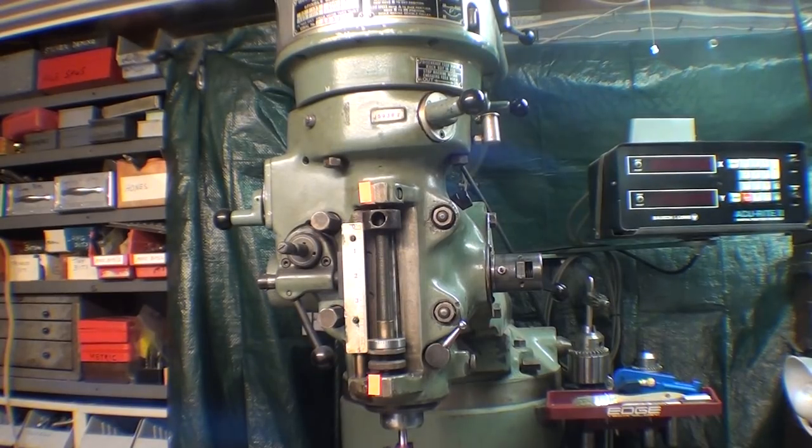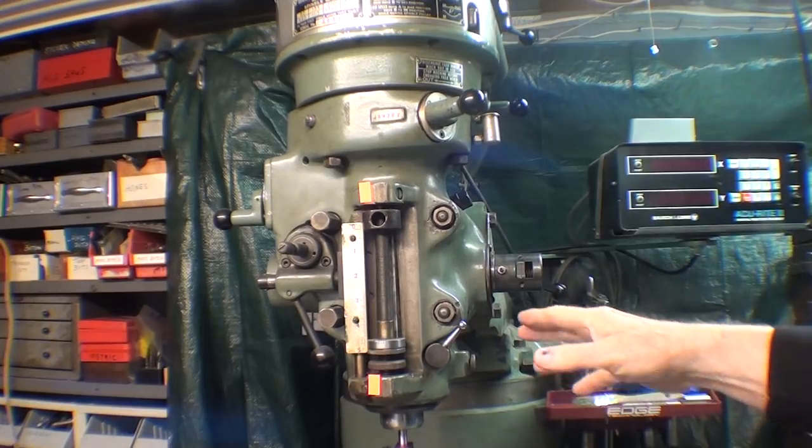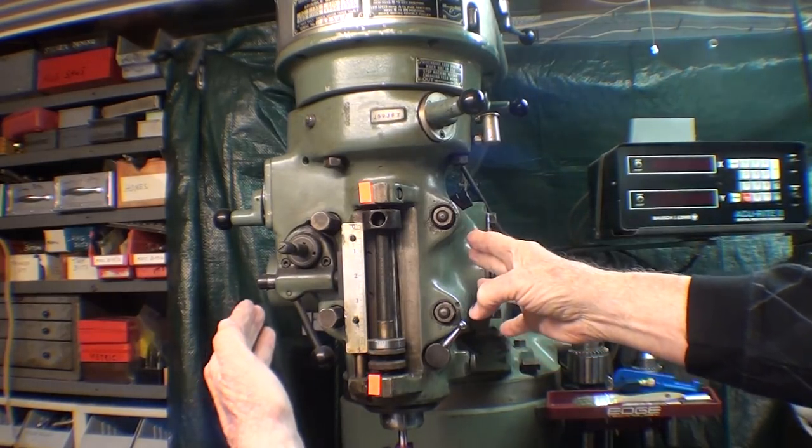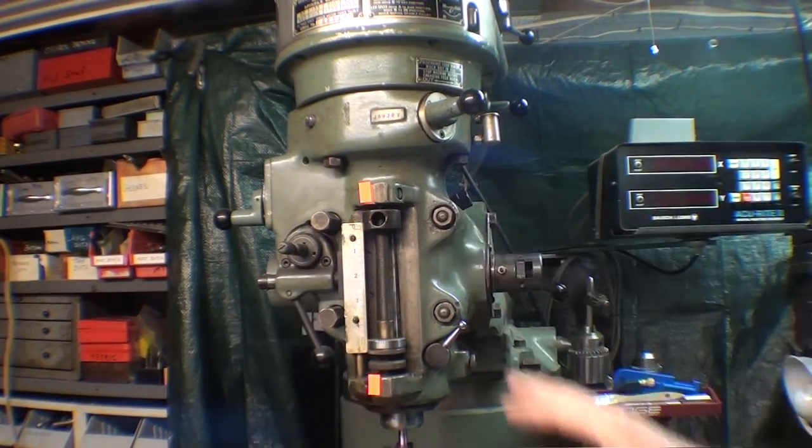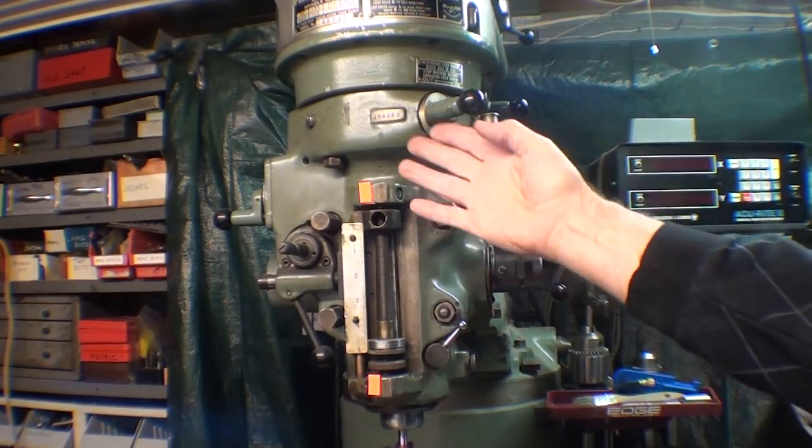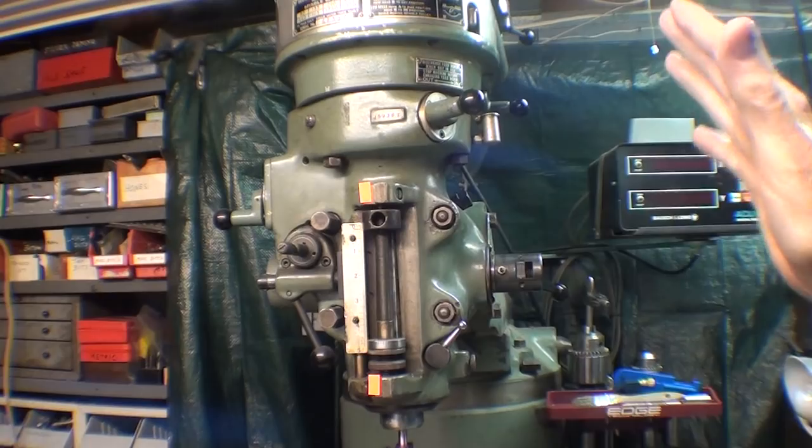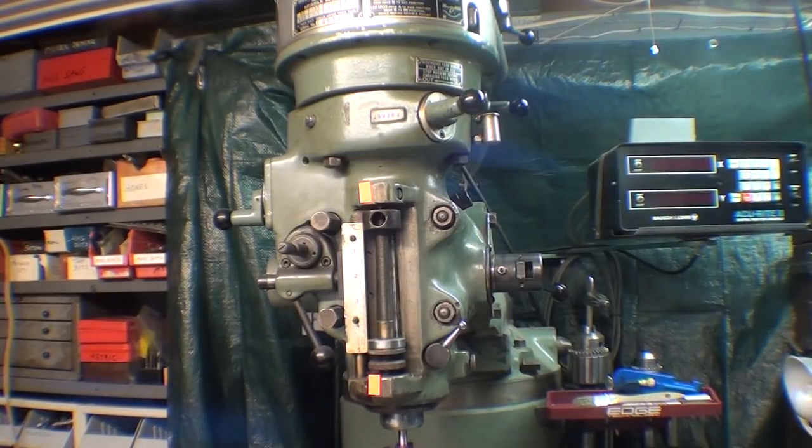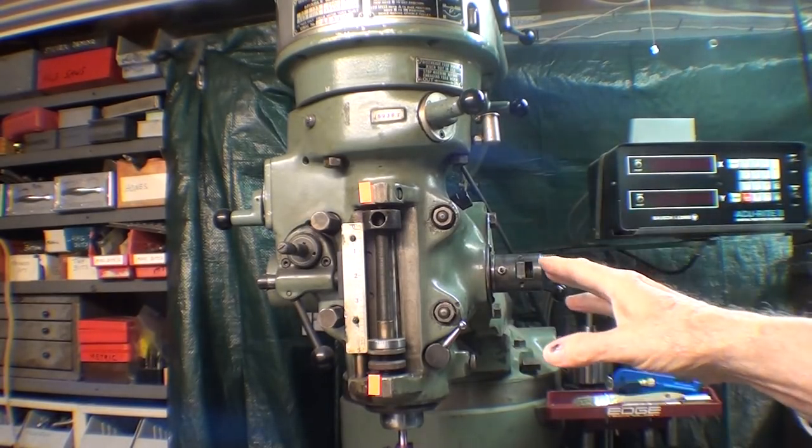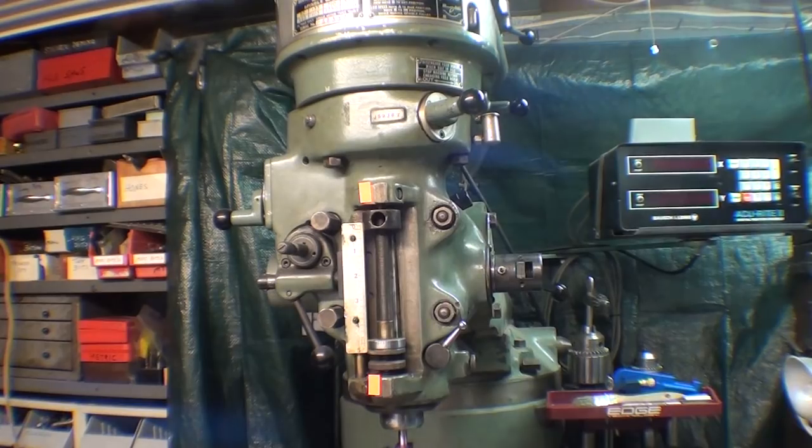As you know, the head on a Bridgeport Mill can be swiveled or tilted right to left, and also it can be tilted in what we call the nodding position. I'm not going to talk about that because that's already been set, and not all milling machines have that feature, so let's just talk about tramming it from left to right, how that's done, and the importance of it.